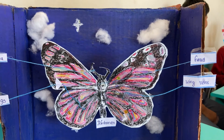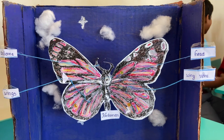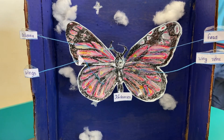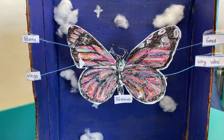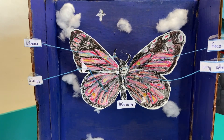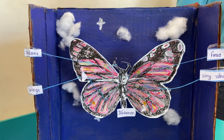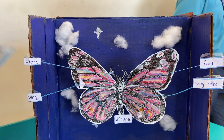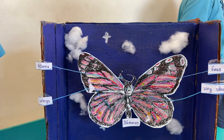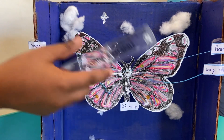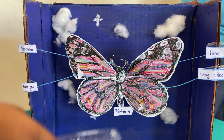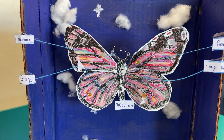Never touch a butterfly's wing because it produces a powder-like substance which is nothing but its excretion and scales. When we touch the excretion of a butterfly, we may get an allergy or an infection. Similarly, it loses a body part like scales. Just like when we peel out skin from our body we feel pain, when we touch or remove its scales, the butterfly also feels pain and cannot fly for a while.